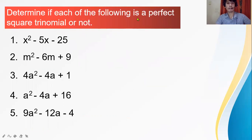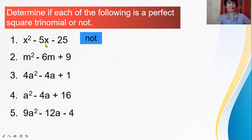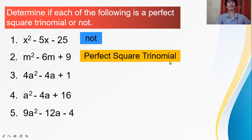Determine if each of the following is a perfect square trinomial or not. Number 1: x squared minus 5x minus 25 — this is not, because the middle term is not twice the product of the first and last term. Number 2: m squared minus 6m plus 9 — this one is a perfect square trinomial. The first and last terms are perfect squares, and the middle term is twice the product of the square root of the first and last term.